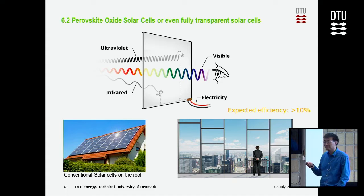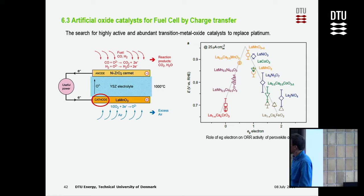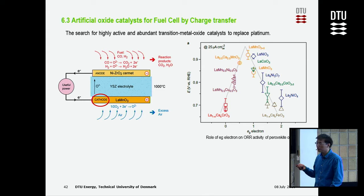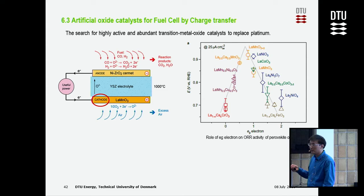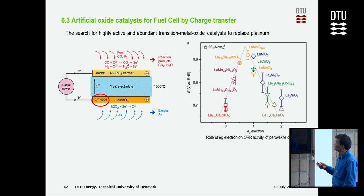Another possibility is relevant to our department's work on fuel cells. You can use solid oxide heterostructures to convert gas to electricity. So far the main problems come from the cathode, because the catalytic property — specifically the oxygen reduction reaction (ORR) activity — is quite poor. Recently, people think this ORR activity may be related to the filling of the EG electrons.